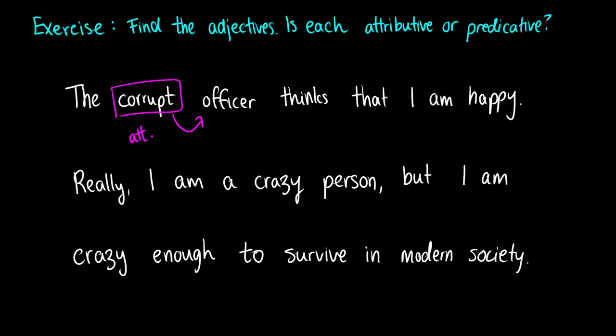Next. Thinks that I am happy. Okay, well happy is a description. And it's a description of what? Well, it's a description of I. So this adjective is crossing over the linking verb be or the be verb be. So this is a predicative adjective.